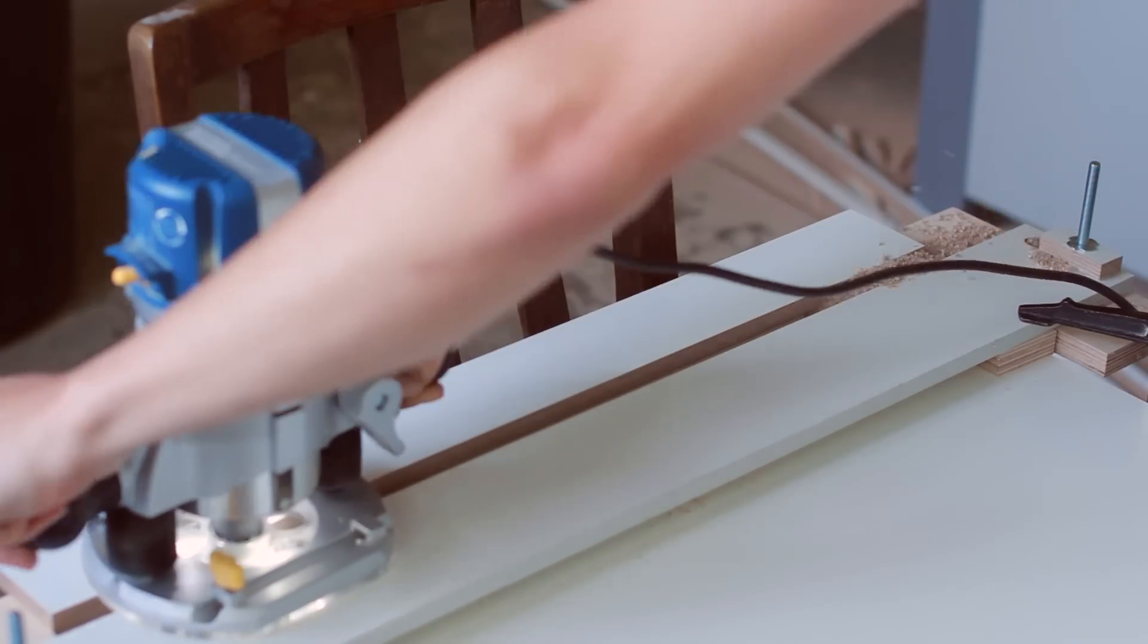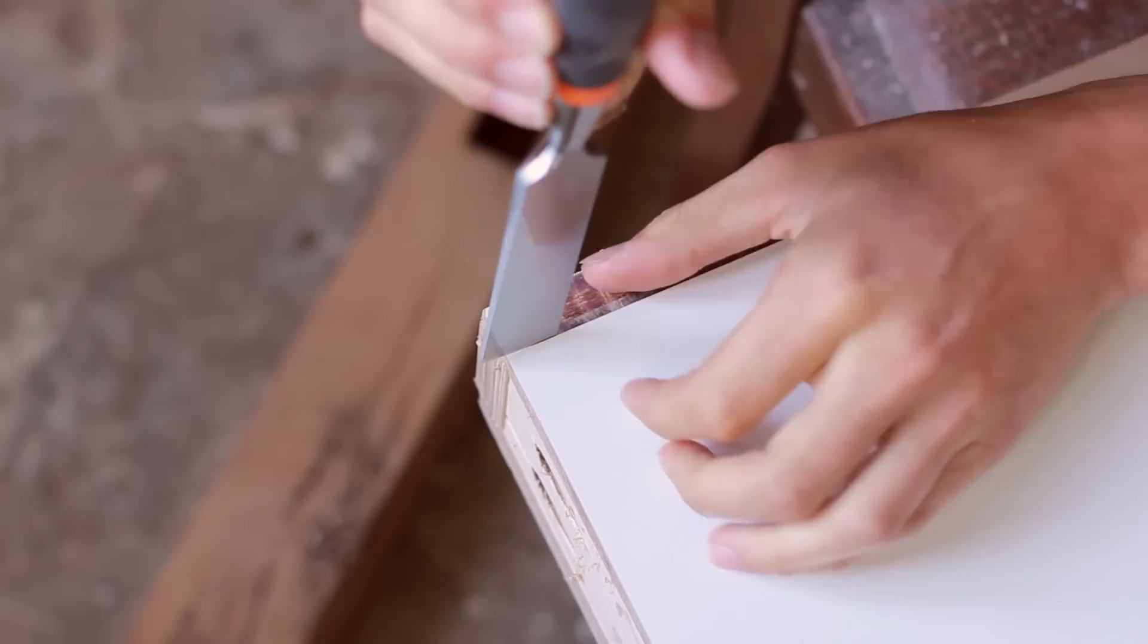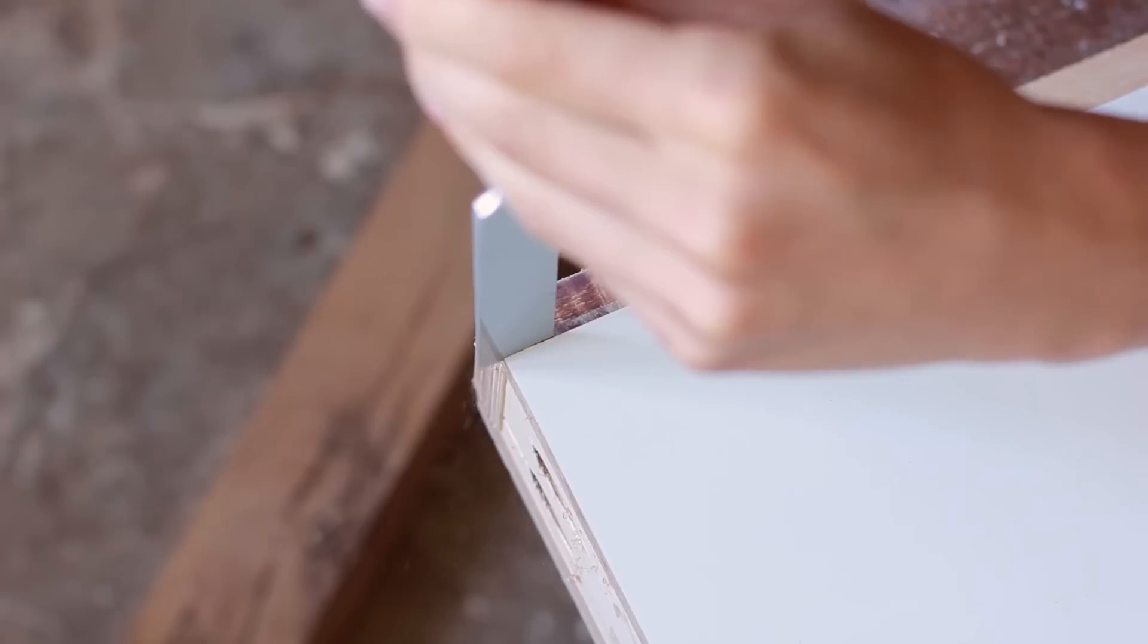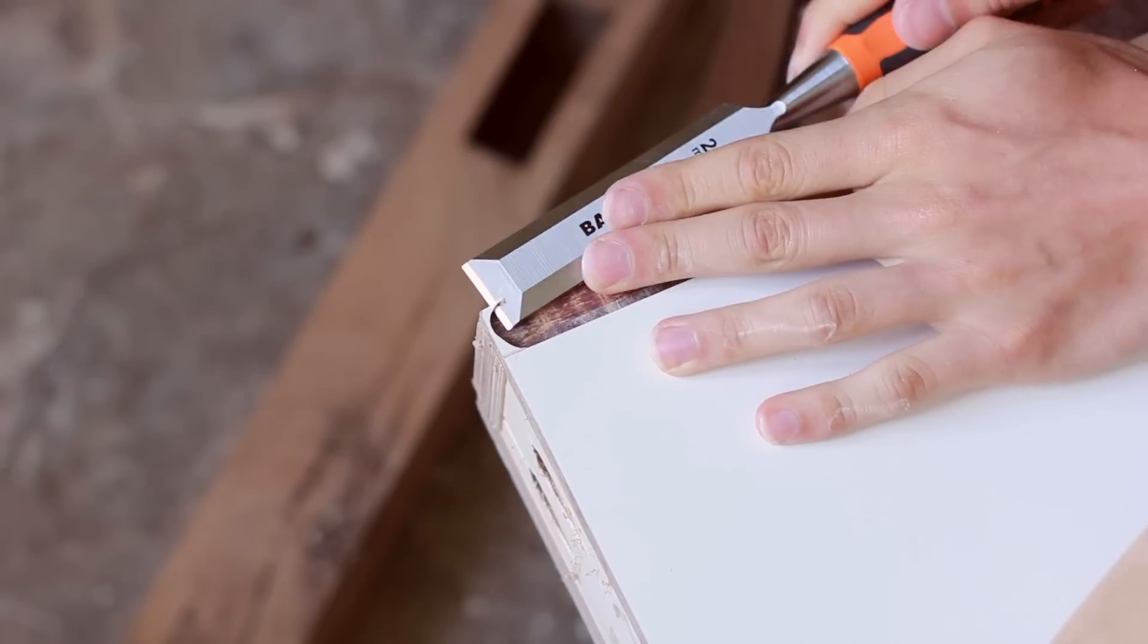For the 680mm dados my jig wasn't quite long enough so it left a round end on the dado. I cleaned this up with a chisel so that the panel would fit in.